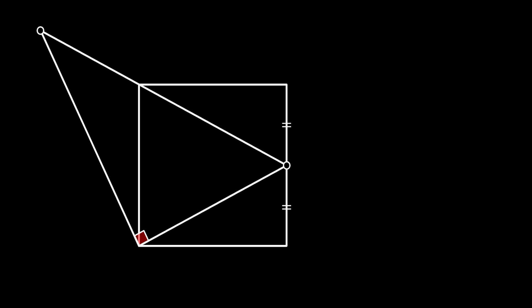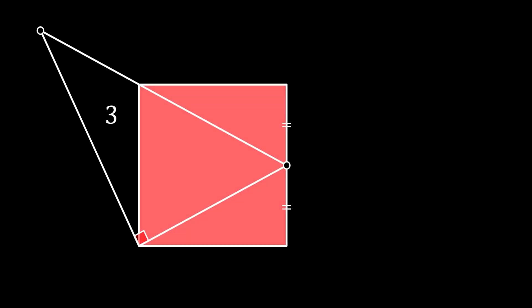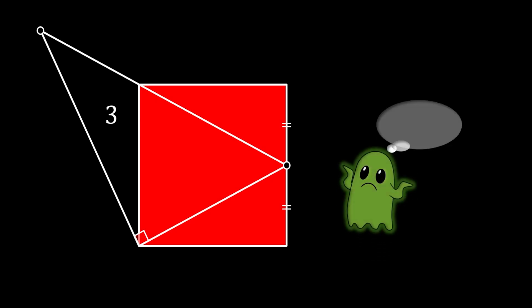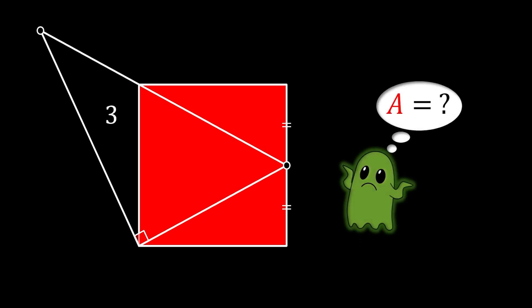The question is: if the area of the outer part of the triangle is equal to 3 squared units, can we somehow calculate the area of our square? Before we start, I would like to say a big shout out to my subscriber Tyrese, who sent me this wonderful problem. If you guys want to try it out for yourself, you can pause the video right now, and then come back and check the solution.